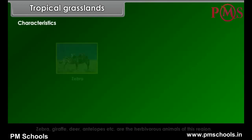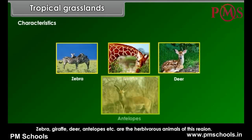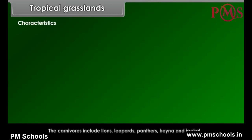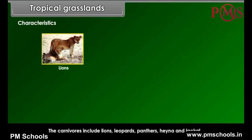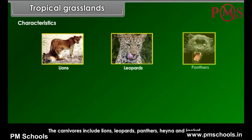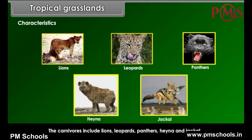Zebra, giraffe, deer, antelopes etc. are the herbivorous animals of this region. The carnivores include lions, leopards, panthers, hyena and jackal.